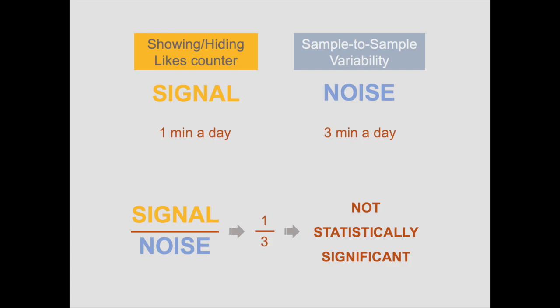If the signal-to-noise ratio is high, we say the difference is statistically significant; if the ratio is low, we say the difference is not significant. For example, the standard error may be 3 minutes per day. Dividing the 1 minute per day difference by 3 gives us 0.33, which is the signal-to-noise ratio. Because this ratio is smaller than 2, we conclude that the difference is not statistically significant.